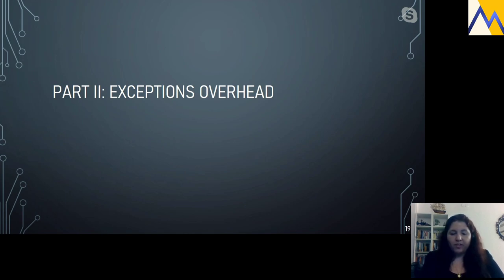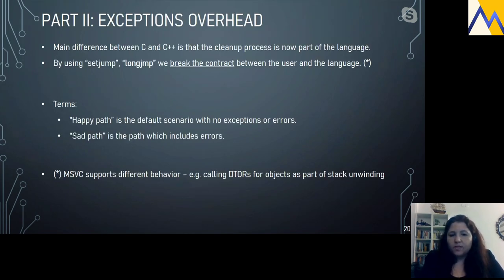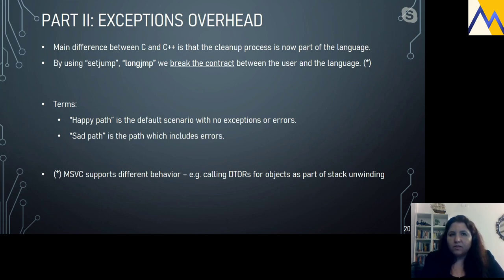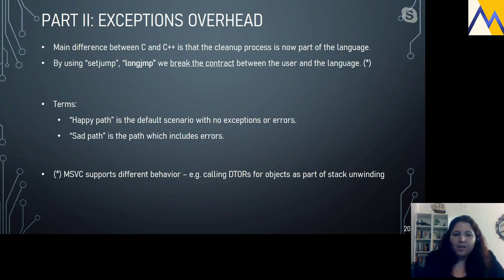A main difference between C and C++ is that the cleanup process is in the language — we can't use setjmp and longjmp as in C because we have to call destructors. Using a jump would break the contract between the user and the language. The exception mechanism in C++ is more complex than a naive C implementation. 'Happy path' is the default scenario with no exceptions; 'sad path' indicates errors. MSVC supports different behaviors and is implementation-defined in this regard.